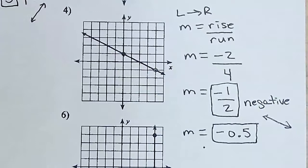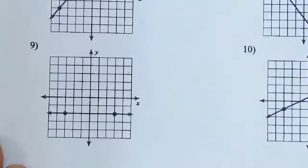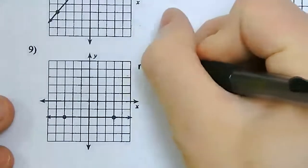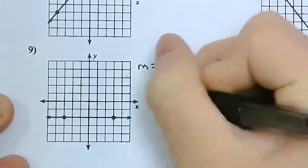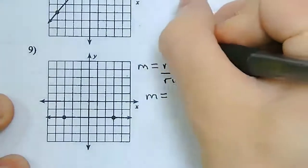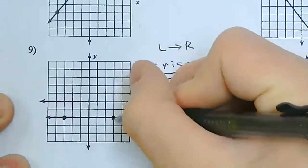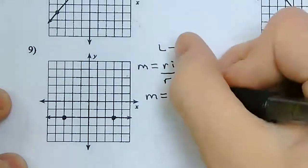Let's look at number 9, because this one is going to be a special type of slope. Notice that we have a completely horizontal line. When I use rise over run, I should get 0 for my slope — let's see if that happens. I always go from left to right, so I start at the point on the left and go all the way to the point on the right. How far up do I need to go to get from the left point to the right point? I don't need to go up at all, so my rise is going to be 0.